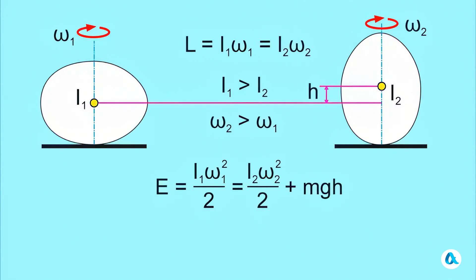Now, let's take into account the conservation of angular momentum L and rewrite this equation as one half of L omega 1 equals one half of L omega 2 plus mgh. And since omega 2 is greater than omega 1, it turns out that the egg's energy has increased, which violates the law of conservation of energy.